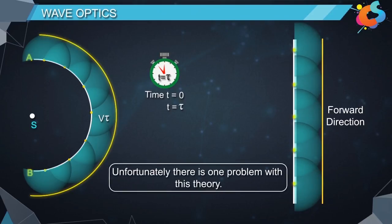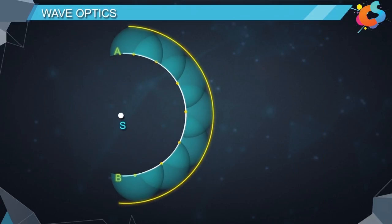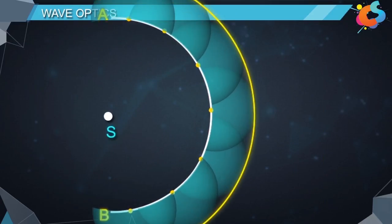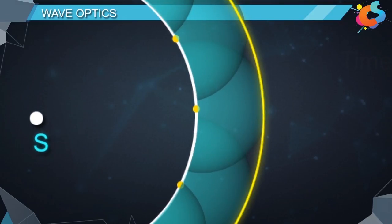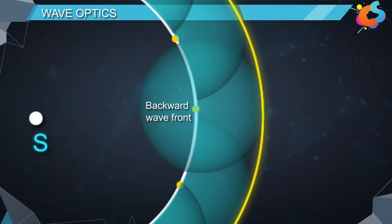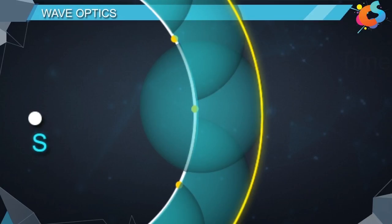Unfortunately, there is one problem with this theory. Since the secondary wavelets are spherical, they will not only generate a forward wave front but also a backward wave front. But in practice, we do not find any back wave.